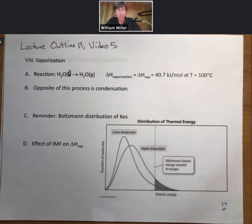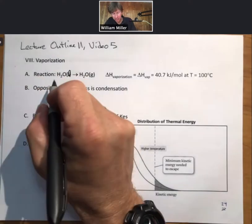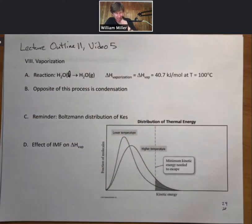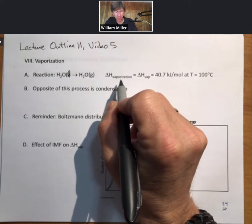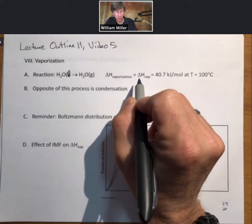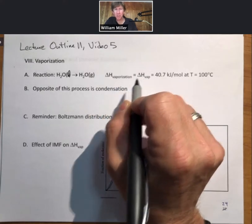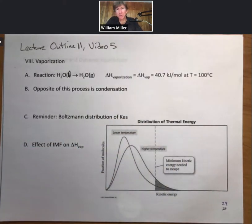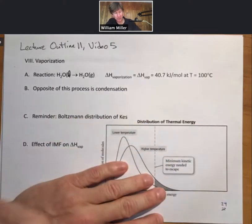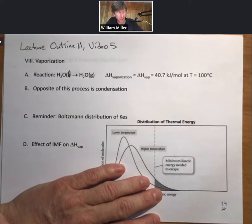In video number five we talk about vaporization. The vaporization reaction is H2O liquid going to H2O gas. Delta H of vaporization, abbreviated as delta H vape, is the change in enthalpy for this specific reaction going from liquid to gas phase. The value is 40.7 kilojoules per mole at T equals 100 degrees Celsius.